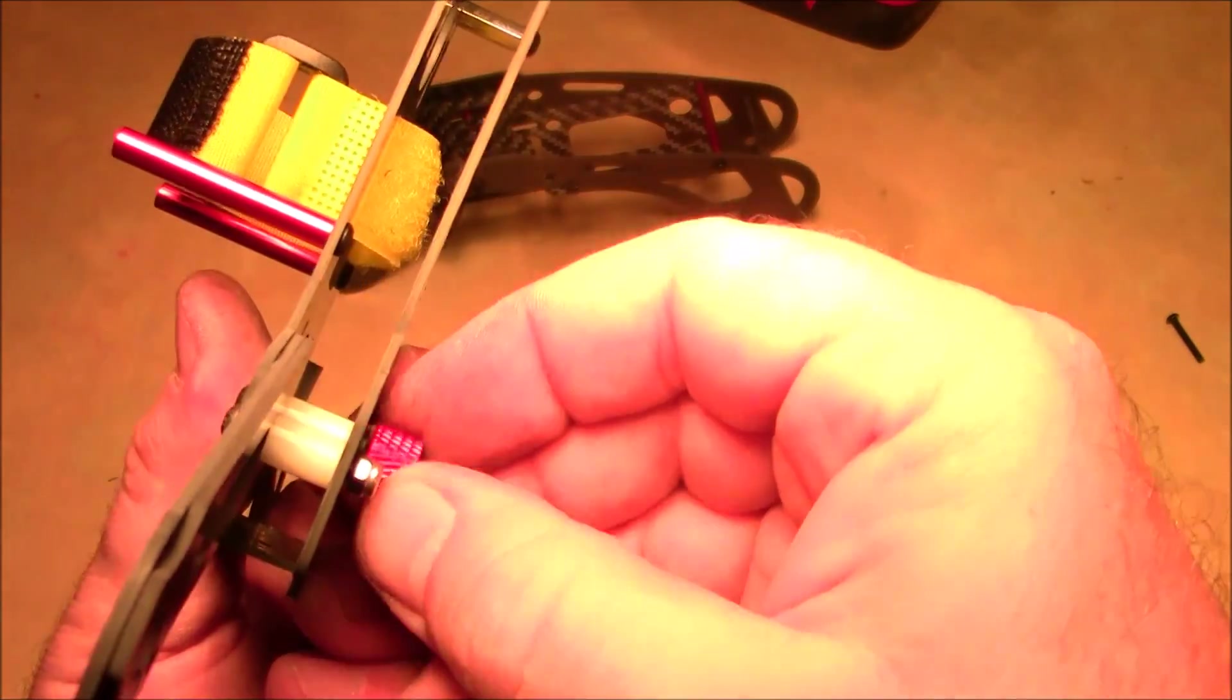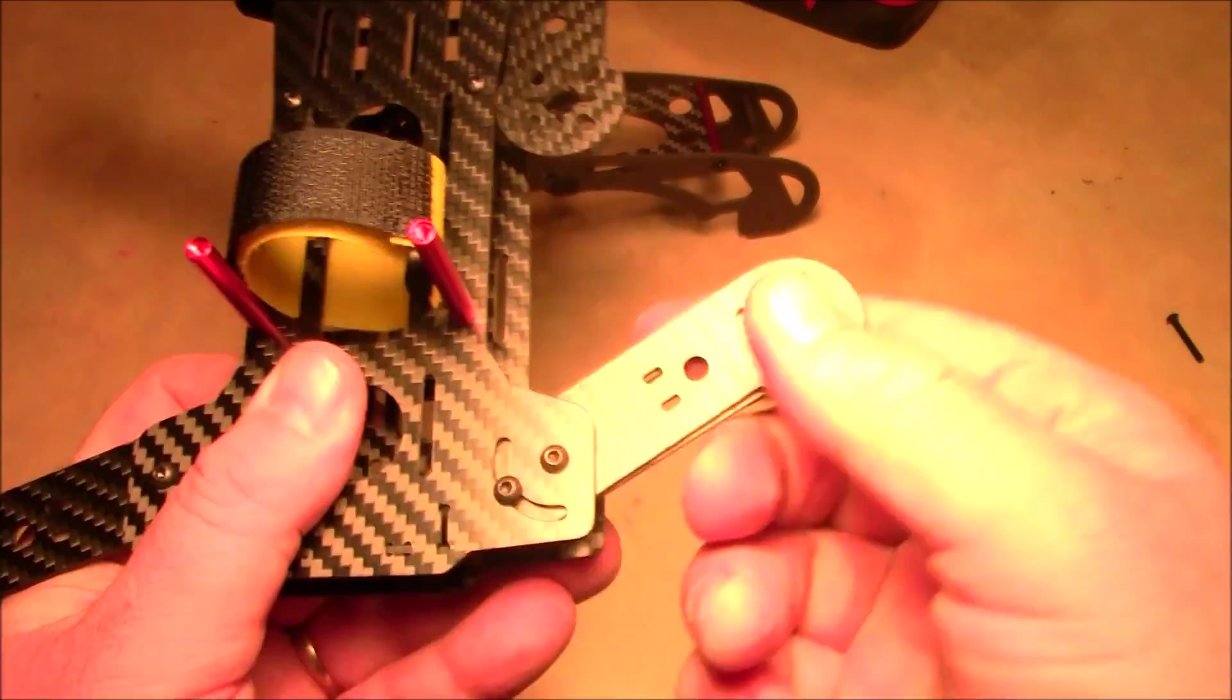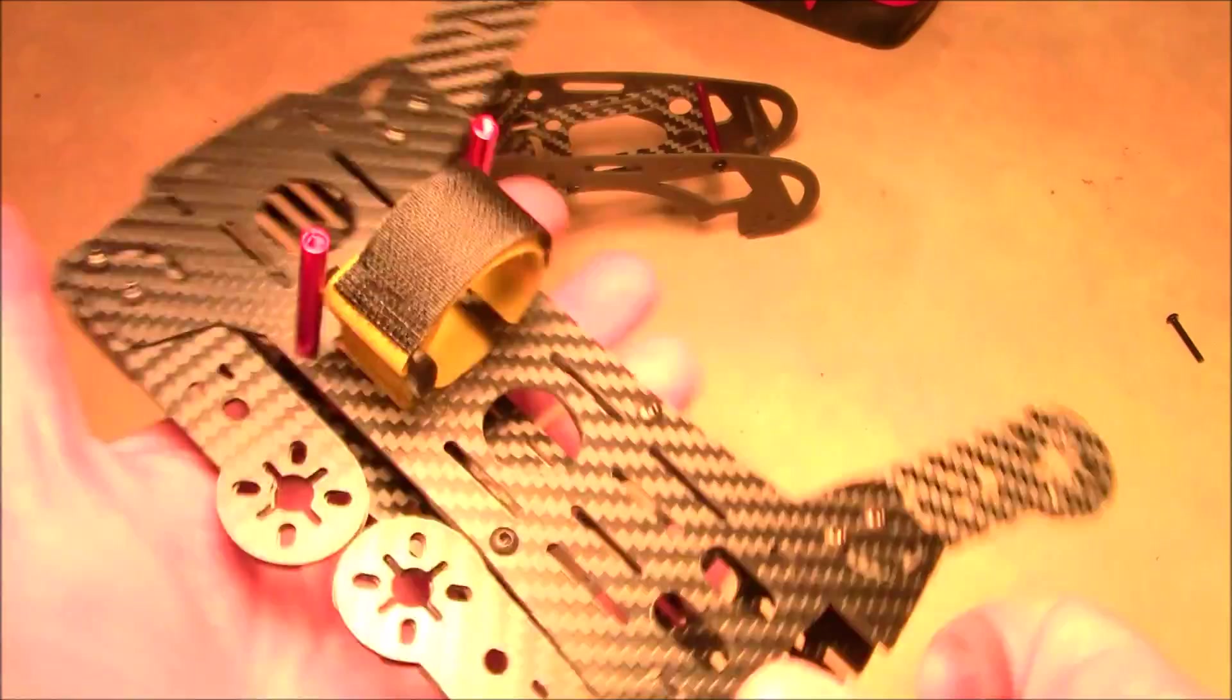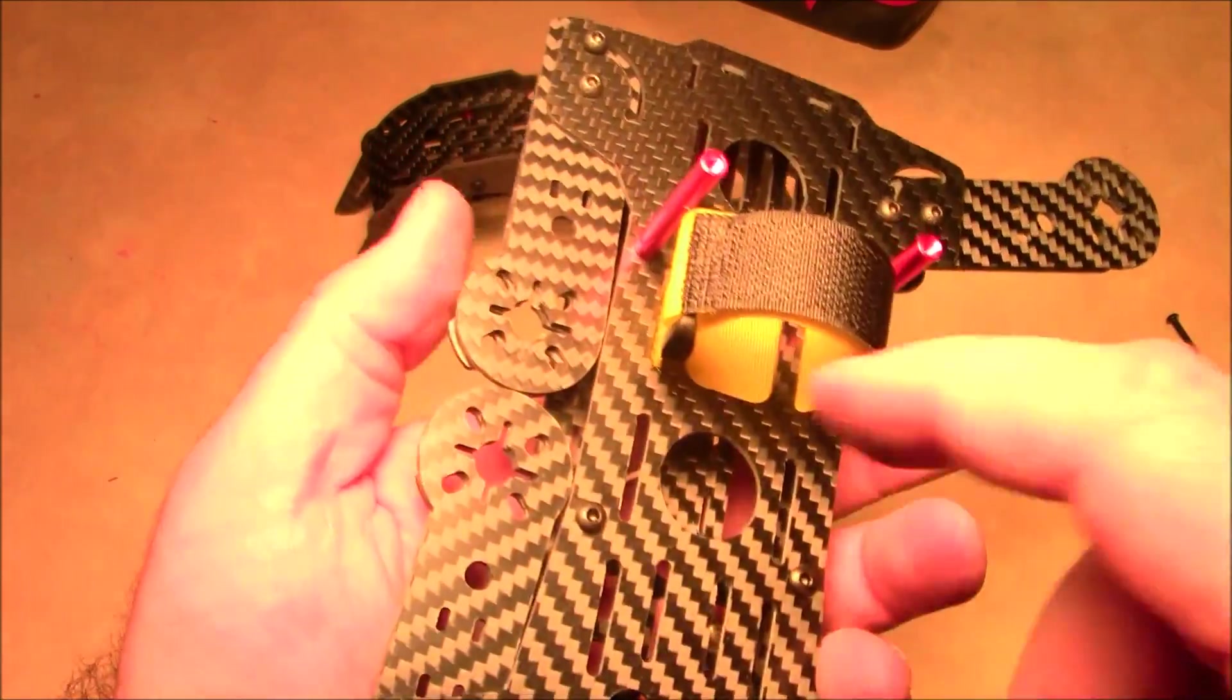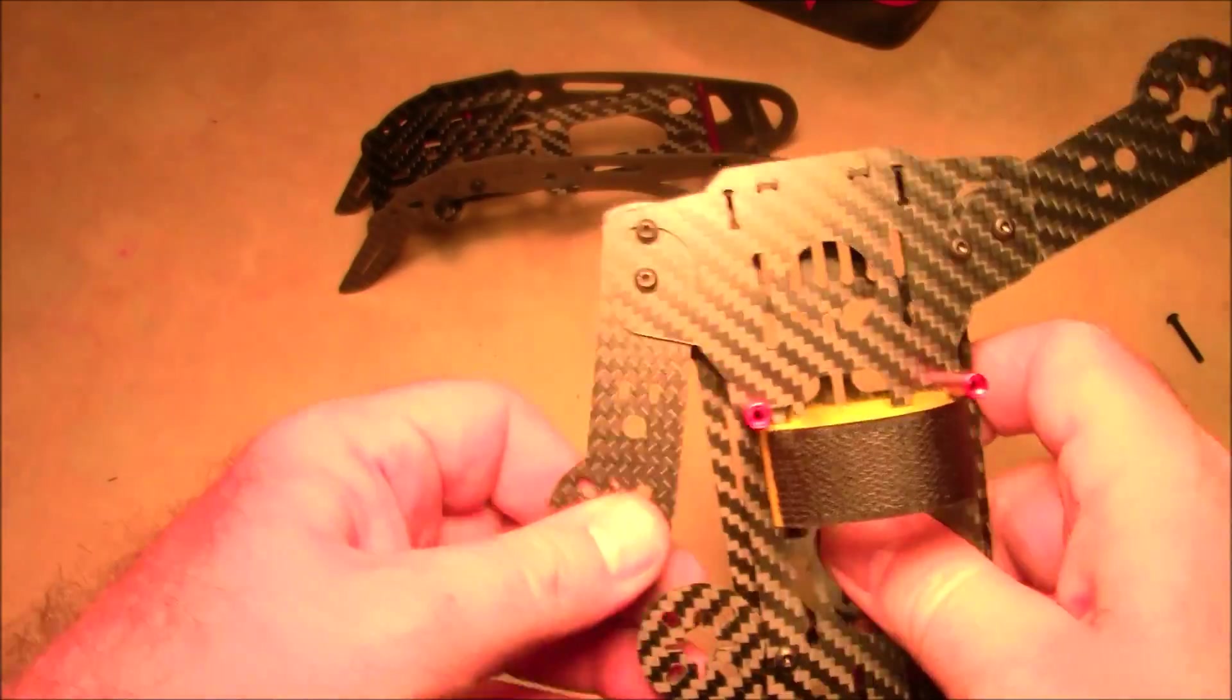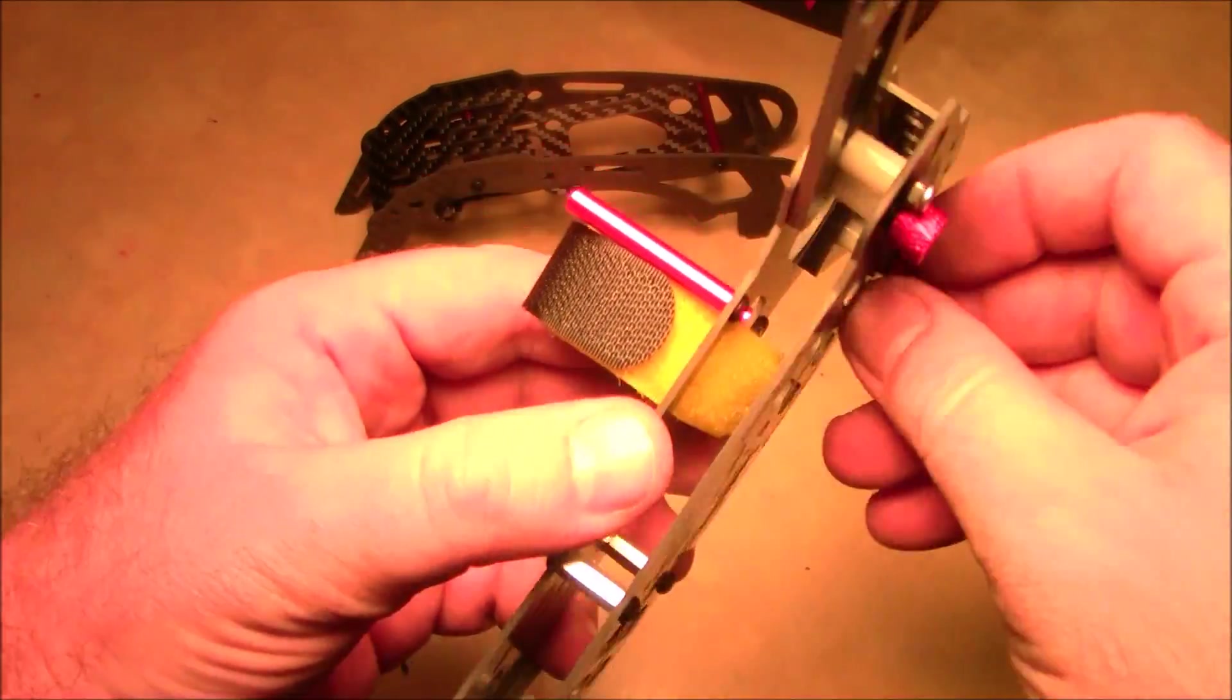So when you're traveling you can tighten it back up so it doesn't slip off. Same thing up here on the front - you loosen it just a little bit so that it's loose, and then this will turn and fold up like that so you can have a nice tight quadcopter.